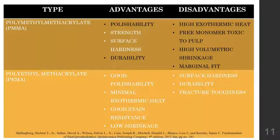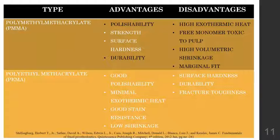Polymethyl methacrylate has good strength, good surface hardness, durability, and polishability. The major drawbacks of this material are high exothermic heat production, high volumetric shrinkage, residual monomer production, and poor marginal fit. Commercially available polymethyl methacrylate materials include Alike from GC America and Temporary Bridge Resin by Dentsply.